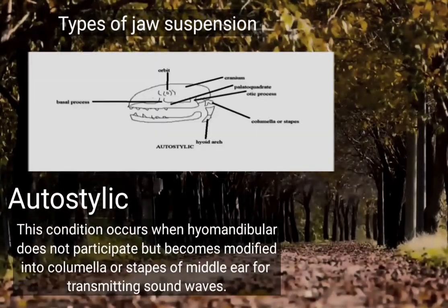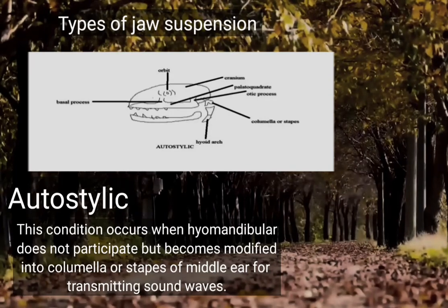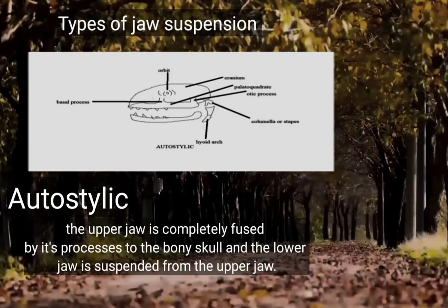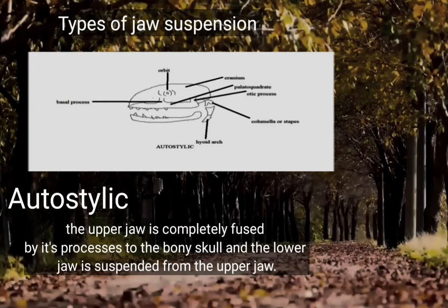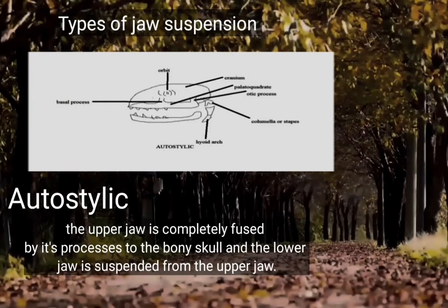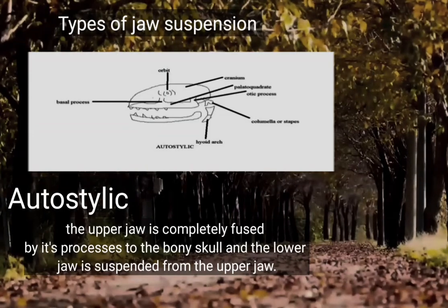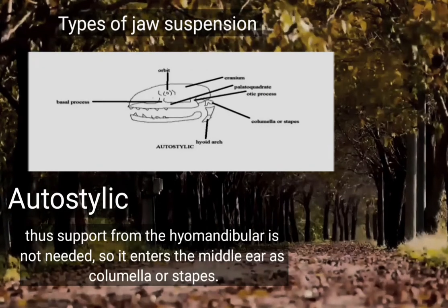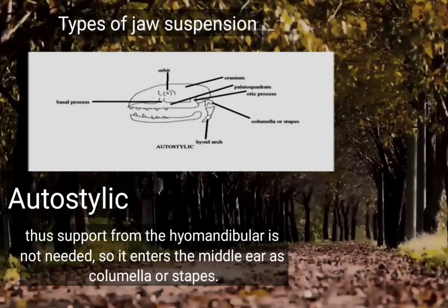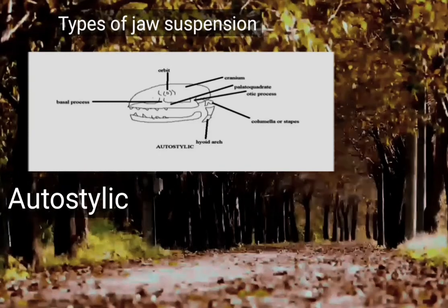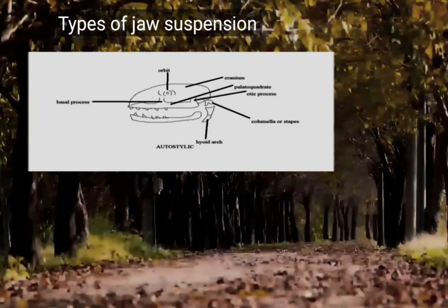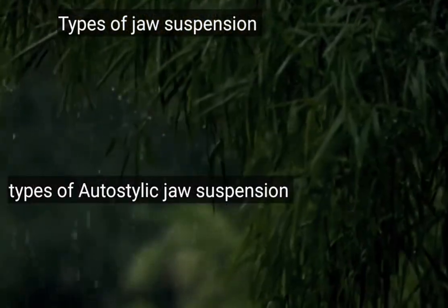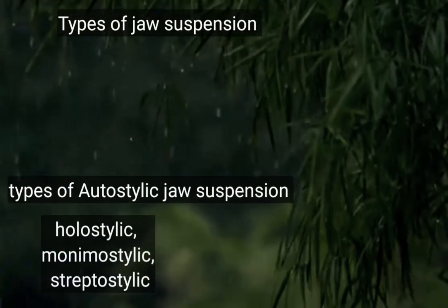The fourth type is autostylic jaw suspension. This occurs when the hyomandibular does not participate in jaw suspension but becomes modified into the columella or stapes of the middle ear for transmitting sound waves. In autostylic jaw suspension, the upper jaw is completely fused by its processes to the bony skull and the lower jaw is suspended from the upper jaw. The hyomandibular enters the middle ear as columella or stapes, as seen in bony fishes and tetrapods. There are three subtypes of autostylic jaw suspension: holostylic, monimostylic, and streptostylic.